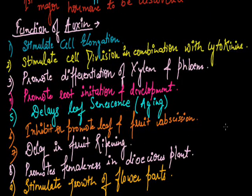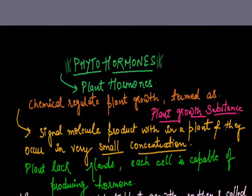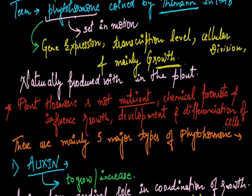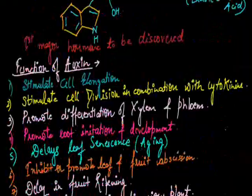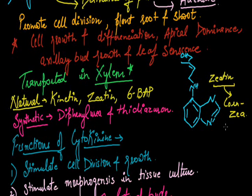Today we have discussed in detail about what are the phytohormones, the major class of the phytohormones, auxin and cytokinins and their functions. In the next class we will deal with the remaining three hormones that are gibberellin, ethylene and abscisic acid.